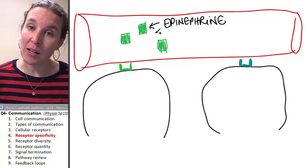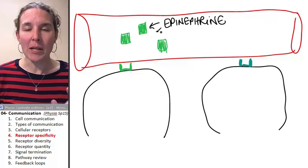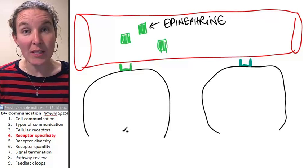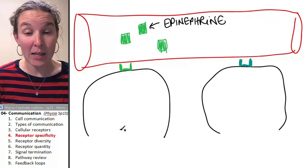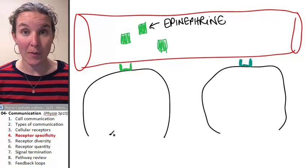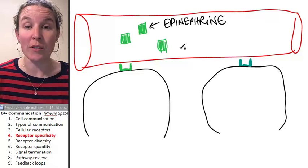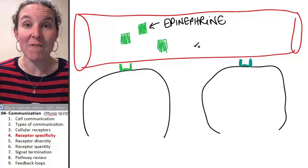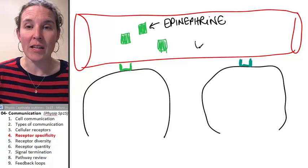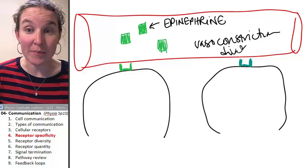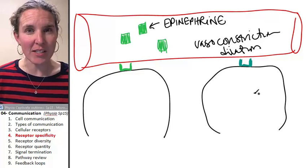You can imagine that, I'm going to give you a little example here. Epinephrine binds with receptors in blood vessels, and it causes either vasoconstriction, so the effect is vasoconstriction, or vasodilation in blood vessels.